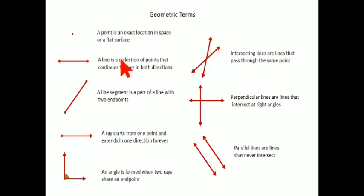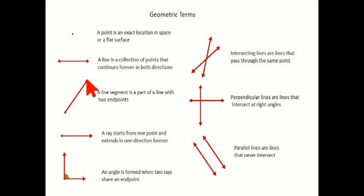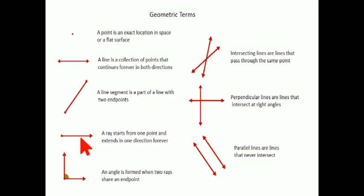A line doesn't have any fixed direction — it extends in both directions. A line segment has endpoints: this is your one endpoint and this is the other point. A ray starts from one point and extends in one direction forever.